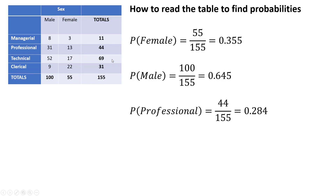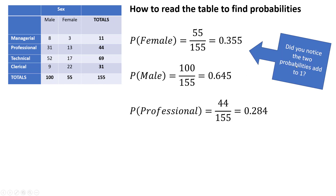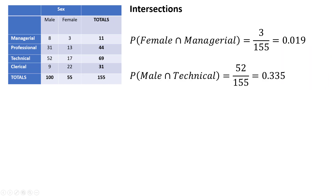From here we can get actual probabilities from this table. If I want to know the probability somebody's a female, I take total females divided by the total sample size. For the probability of a male, I take the total males divided by the total sample size. Notice these two probabilities add to one — they should, because there are only males and females. For the probability of professional, I read across the row total and divide by the total sample size.